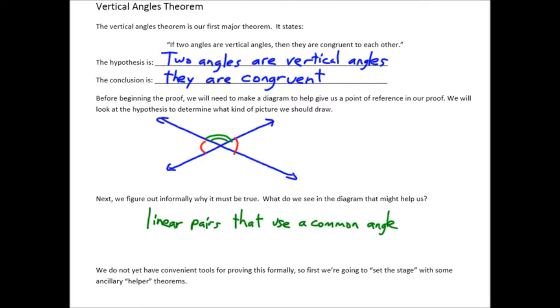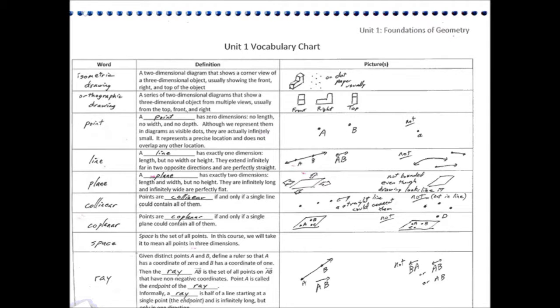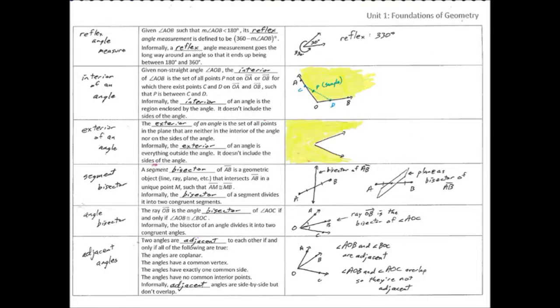This is a good plan, but the details are very shaky right now. All we're given is that we have vertical angles. If I want to make use of the fact that we have linear pairs and angles add up to 180 degrees, that's not part of our given. Furthermore, if we look at the definition of vertical angles — two angles are vertical if and only if their sides form intersecting lines — that doesn't say anything about linear pairs, so we're missing pieces.